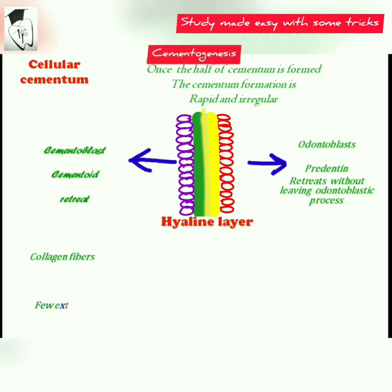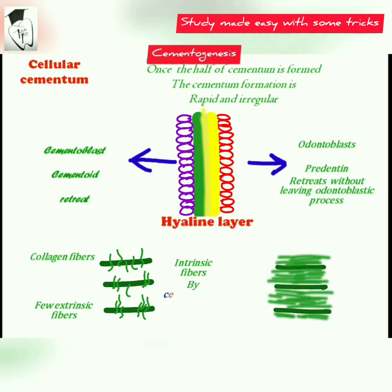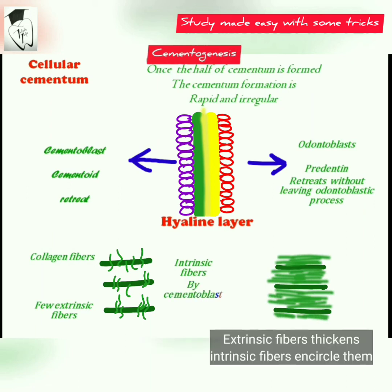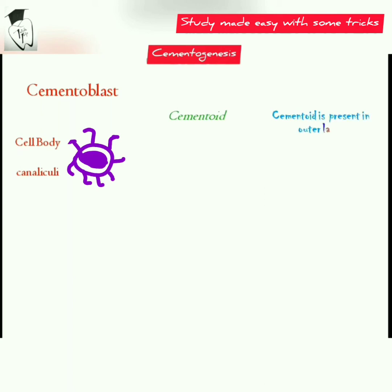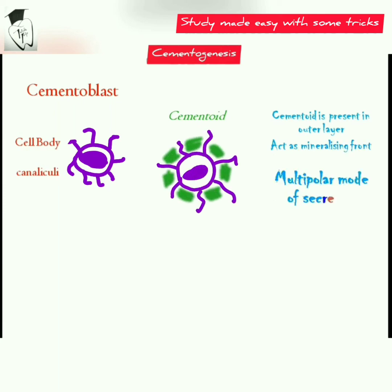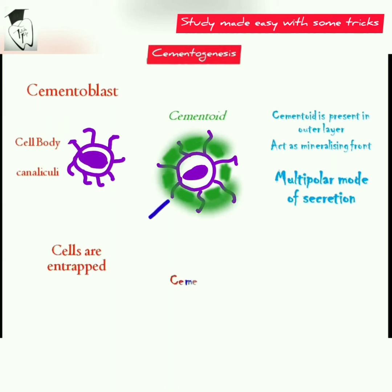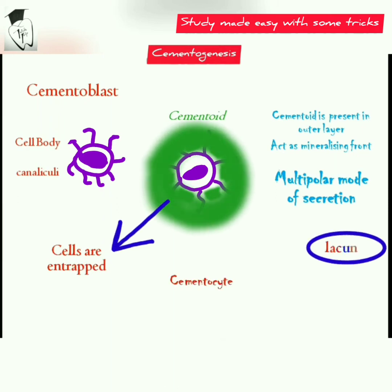In the cementum matrix of cellular cementum, there are intrinsic fibers formed by cementoblasts that are haphazardly arranged, and few extrinsic fibers which later thicken; the intrinsic fibers encircle the extrinsic fibers. The cementoblast has a cell body and cell processes called canaliculi. It lays the cementoid or cementum matrix between these cell processes — this is called the multipolar mode of secretion. In the process of cementum formation, cells get entrapped in spaces called lacunae and are called cementocytes.